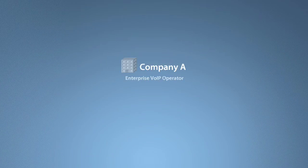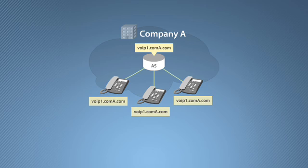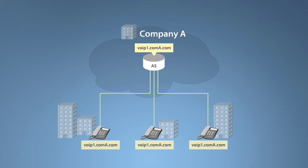Company A is an enterprise voice over IP operator providing services using SIP phones and a SIP application server in their network. The application server provides services like FindMeFollowMe, SimultaneousRing, and more. Company A configures each phone with the address of the SIP application server before shipping it to the customer site. The SIP phones use that address for registration and to make voice calls.